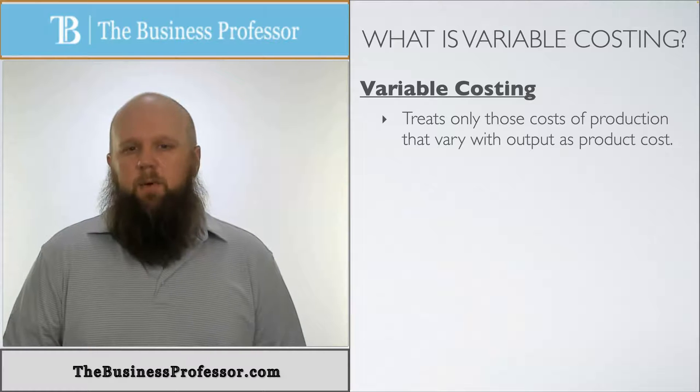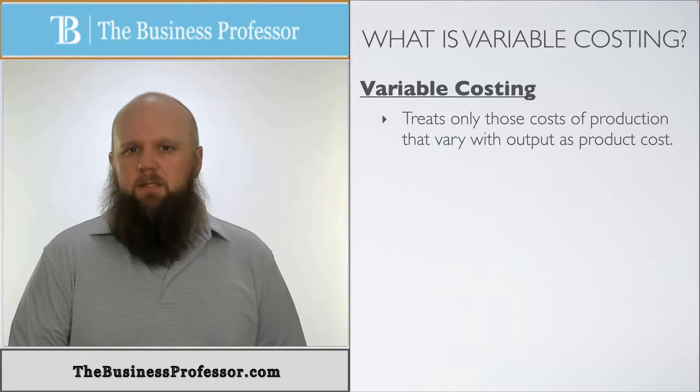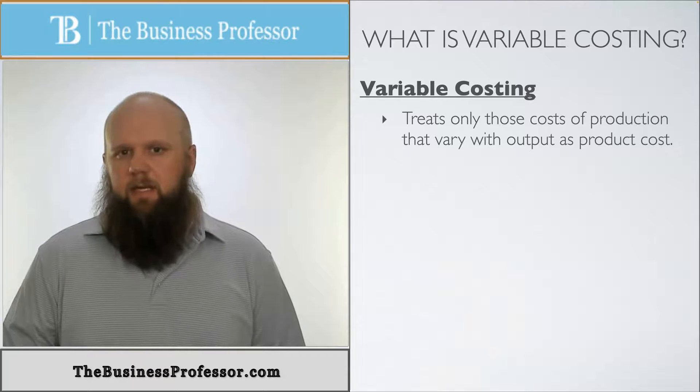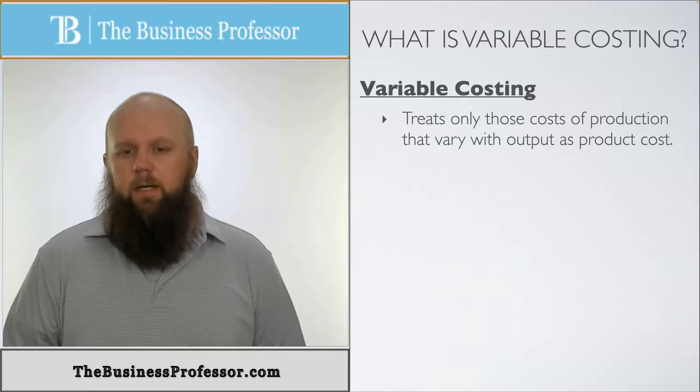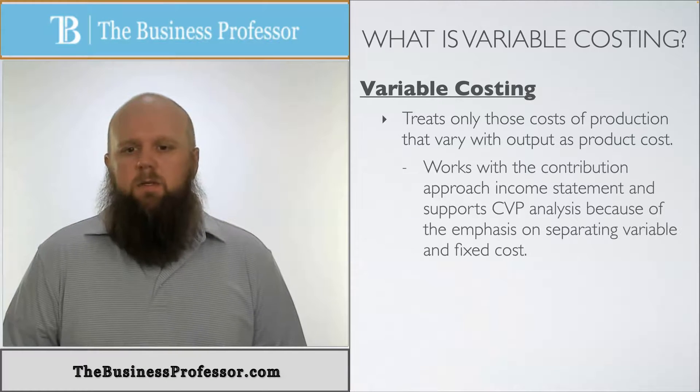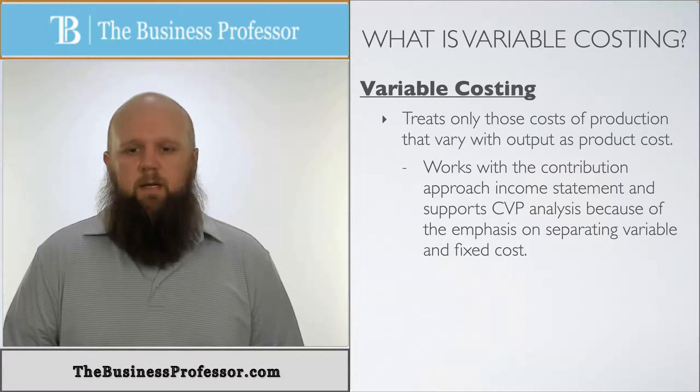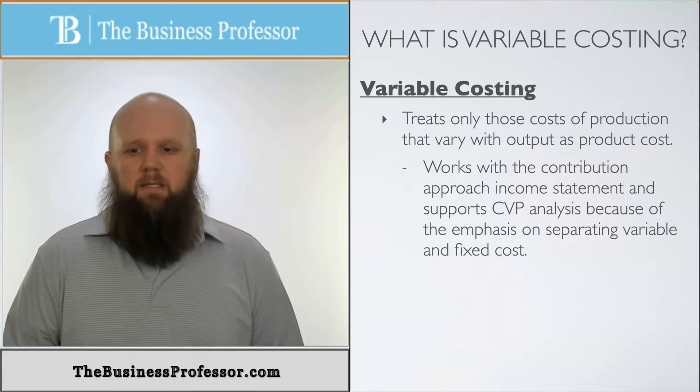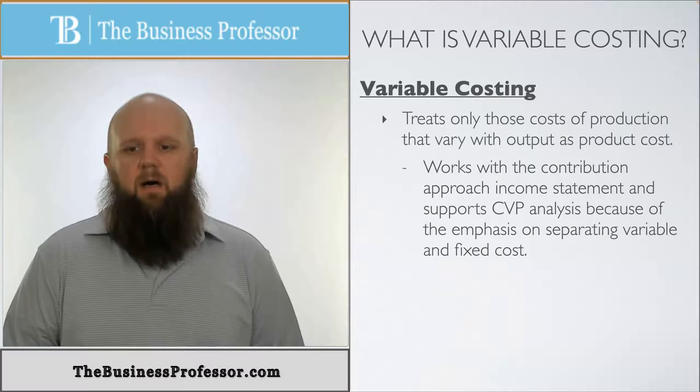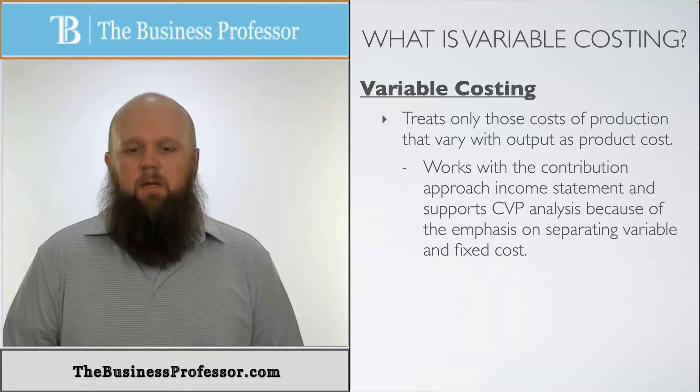This is another way of saying we look at product cost as only the variable costs, not all direct material, direct labor, manufacturing overhead, or at least manufacturing overhead. This works with contribution formatted income statements and it supports CVP analysis because it emphasizes the separation of variable and fixed costs.